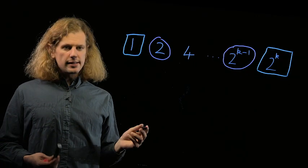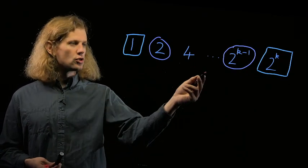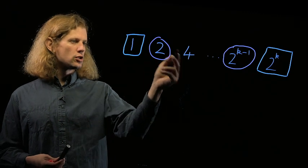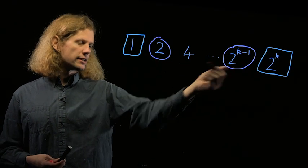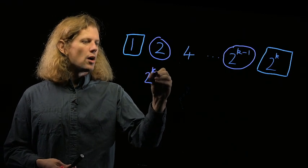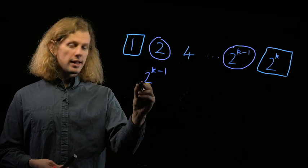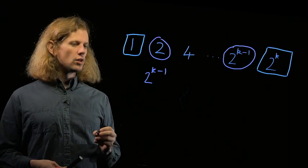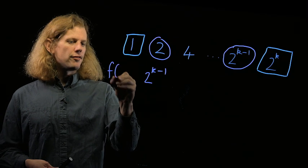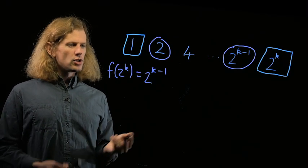This is easy to count because I've got k minus 1 independent choices. Choose this or not, choose this or not, and so on up to this. So that means that there are 2 to the k minus 1 different lists, because that's choices of two things, yes or no, k minus 1 times. So f of 2 to the k is 2 to the k minus 1, which is a nice number.